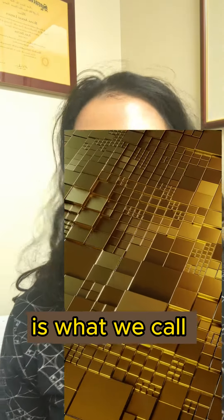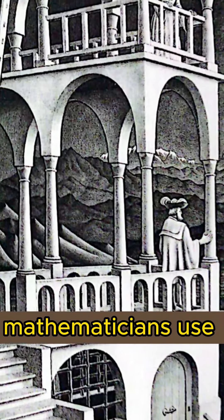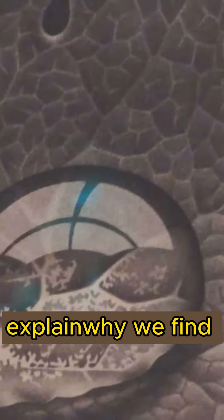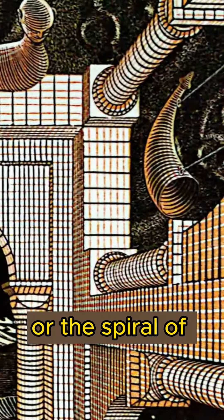One example is what we call the golden ratio. As far back as the ancient Greeks, mathematicians used numbers to try to explain why we find beauty in the patterns of flowers or the spiral of a seashell.